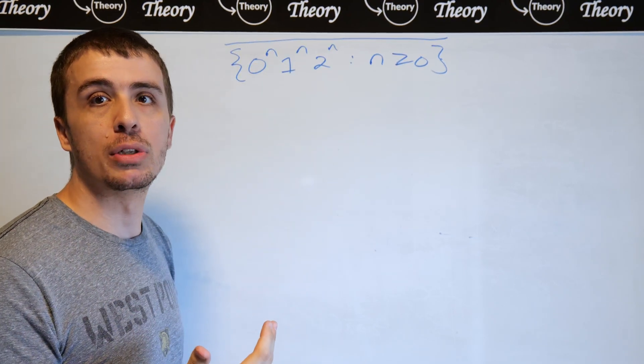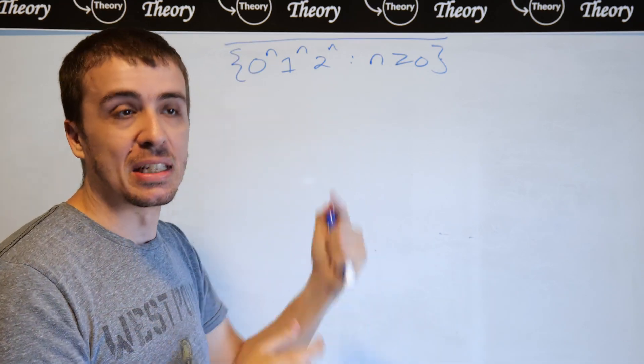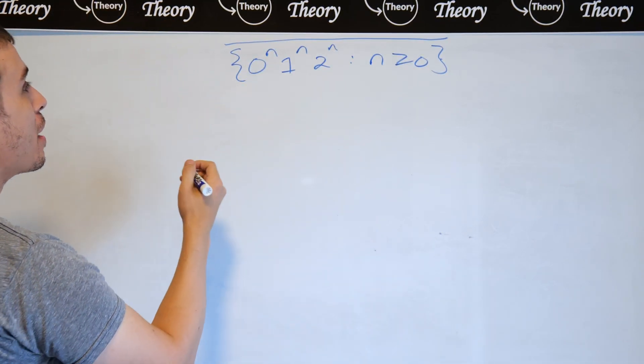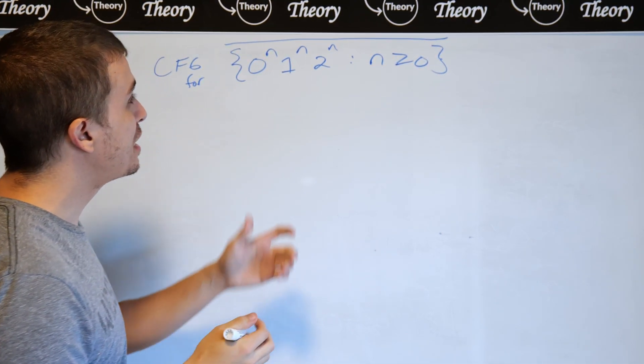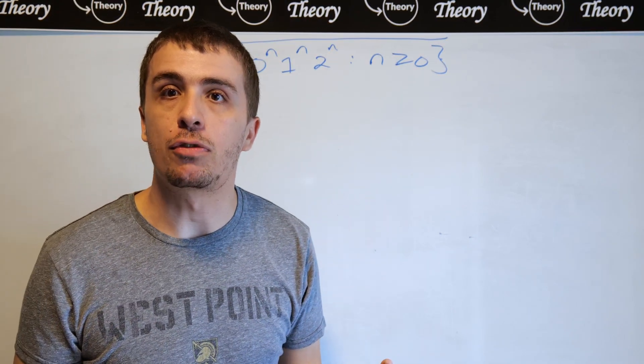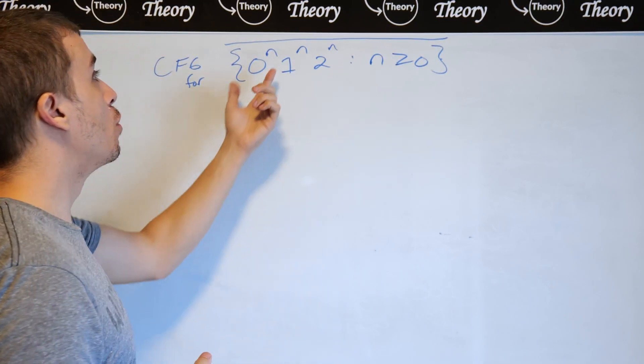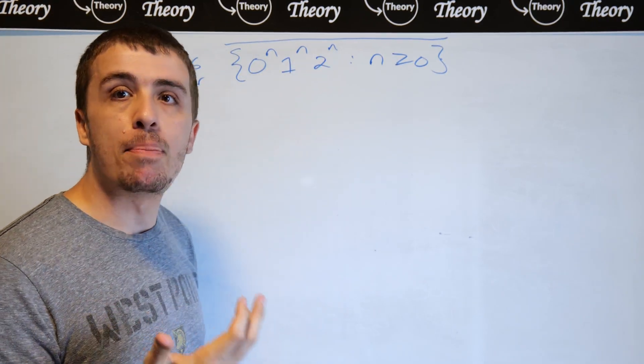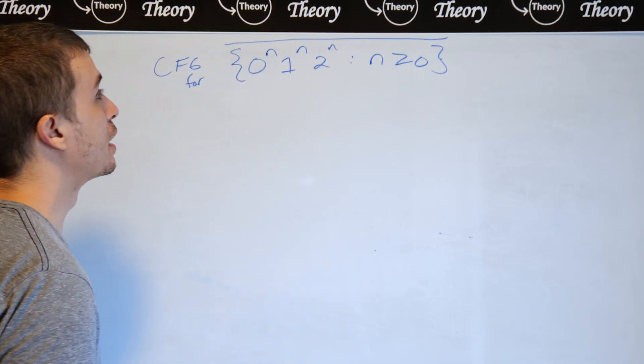So 0 to the n, 1 to the n, 2 to the n. Any string that is not of that form is in this language. And what we want to do is we want to make a CFG for this. So how can we actually do that? Notice that the original language without the complement on it is not context-free, and so therefore there is no context-free grammar for it. So we've got to exploit some properties of the original language in order to be able to make a context-free grammar for it.